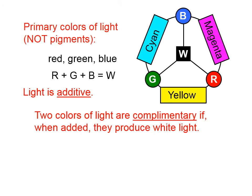Two colors of light are complementary if, when added, they produce white light. So, for example, blue plus yellow will give you white. And the reason for that is that yellow is simply red light and green light combined, and we know that blue and red and green give us white.